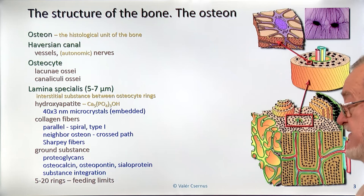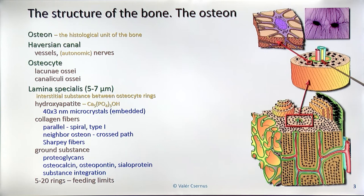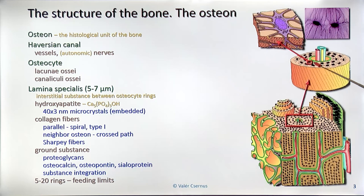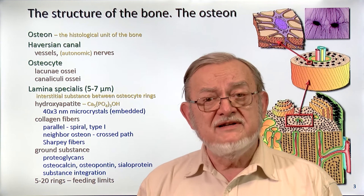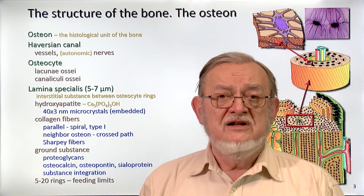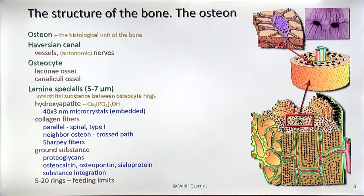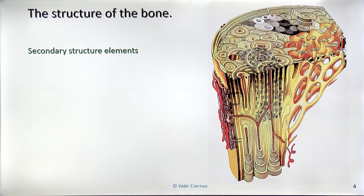In an osteon, we have 5 to 20 rings, and the number of rings is limited by the feeding principle. The only location where we have vessels in the osteon is the middle — the Haversian canal. Cells in the innermost ring directly pick up nutrients from the arteries, consume some, and pass the rest to the next ring, and so on. The further a cell is from the Haversian canal, the less oxygen and nutrition it receives. Consequently, up to 20 rings can be fed this way — this is the maximum.